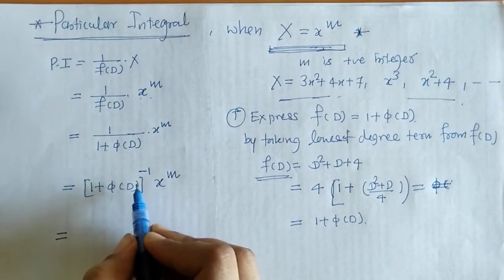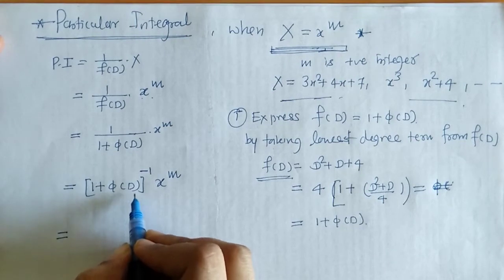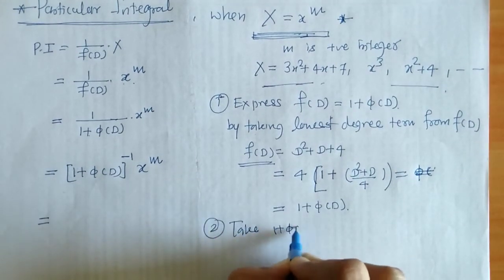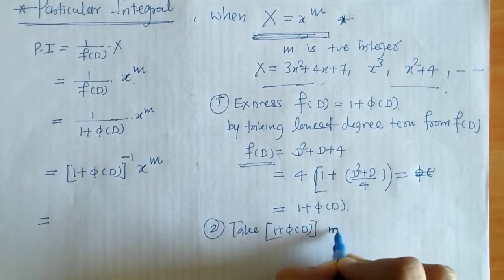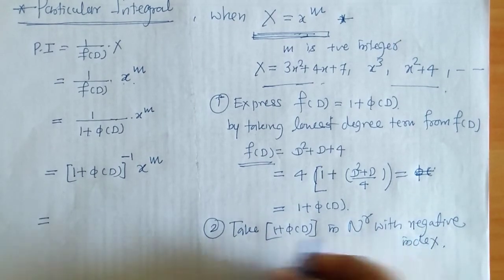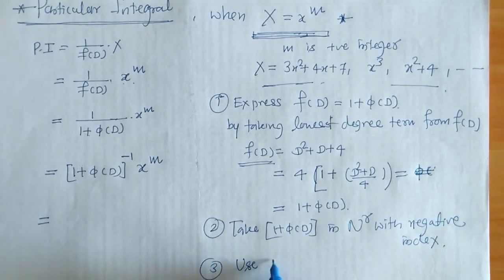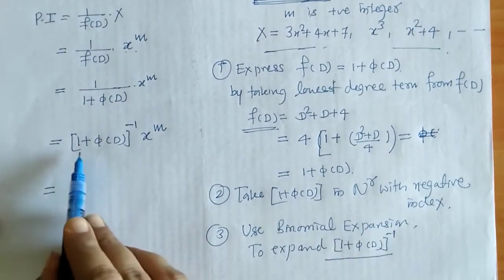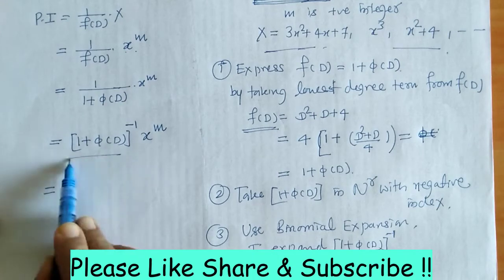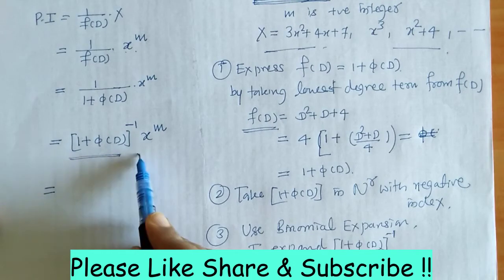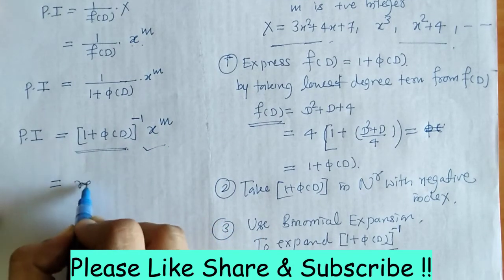Then we have to make use of binomial expansion. We take 1 plus φ(D) in the numerator with a negative index and then use the binomial expansion. We expand 1 plus φ(D) using binomial expansion and then operate it on x raised to m, and then we will get the required PI.